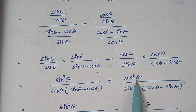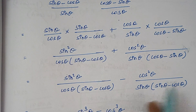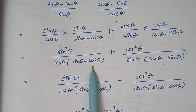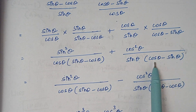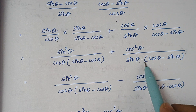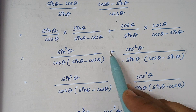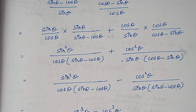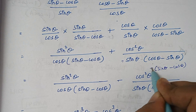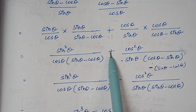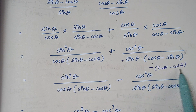Similarly for the second part: cos square theta divided by sin theta into cos theta minus sin theta. Now sin theta minus cos theta and cos theta minus sin theta are reverses of each other. So I take a minus sign out from the second term's denominator. When I take minus outside, cos theta becomes minus cos theta and minus sin theta becomes plus sin theta, so cos theta minus sin theta becomes minus of sin theta minus cos theta. This minus sign multiplied by the plus gives minus cos square theta over sin theta into sin theta minus cos theta.